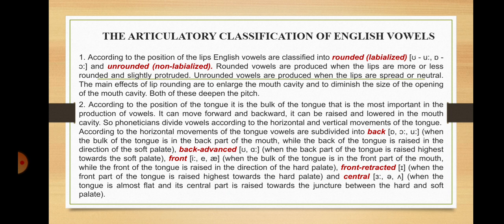According to the position of the lips, English vowels are classified into rounded (labialized), such as u, u, o, o, and unrounded or non-labialized. Rounded vowels are produced when the lips are more or less rounded and slightly protruded; unrounded vowels are produced when the lips are spread or neutral. The main effects of lip rounding are to enlarge the mouth cavity and to diminish the size of the opening, both of which deepen the pitch.